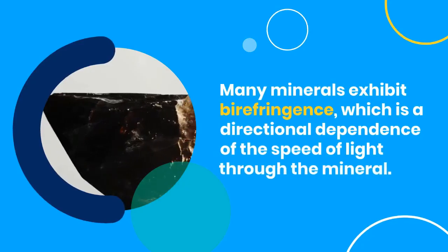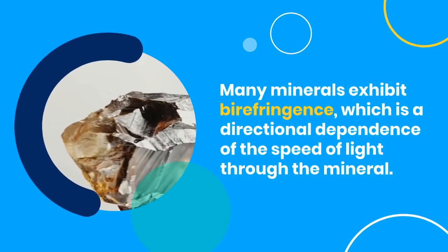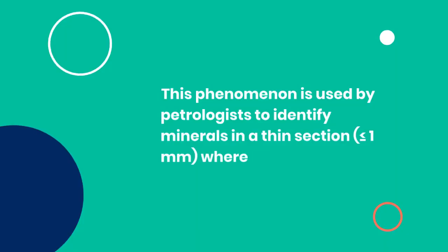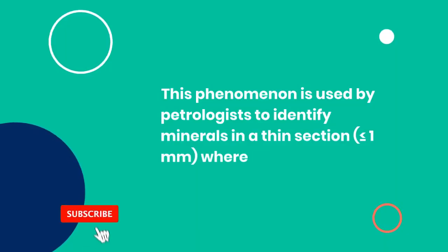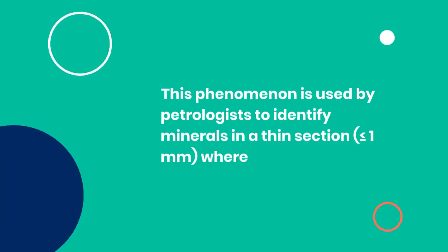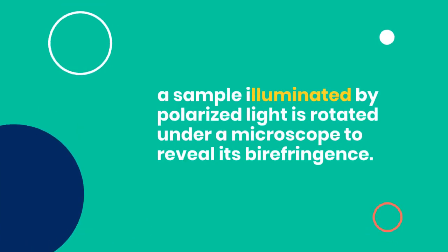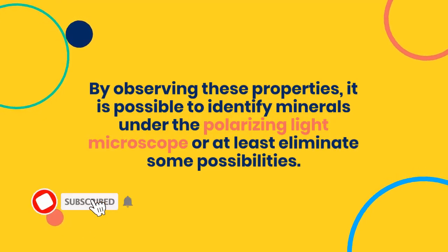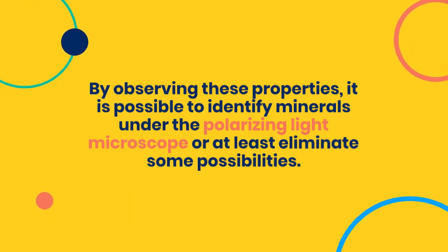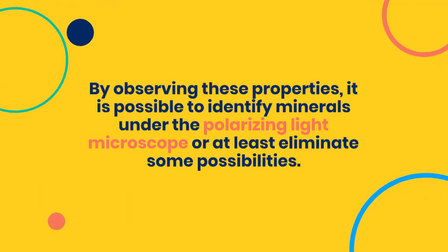Birefringence: many minerals exhibit birefringence, which is a directional dependence of the speed of light through the mineral. This phenomenon is used by petrologists to identify minerals in a thin section of less than or equal to one millimeter, where a sample illuminated by polarized light is rotated under a microscope to reveal its birefringence. By observing these properties, it is possible to identify minerals under the polarizing light microscope, or at least eliminate some possibilities.